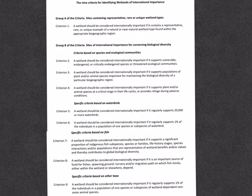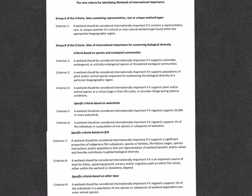As per the convention, there are nine criteria for identifying wetlands of international importance, grouped into two subsections. Group A contains sites with representative, rare, or unique wetland types. Group B contains sites of international importance for conserving biological diversity, and is further divided into four subsections: criteria based on species and ecological communities, specific criteria based on waterbirds, specific criteria based on fish, and specific criteria based on other taxa.